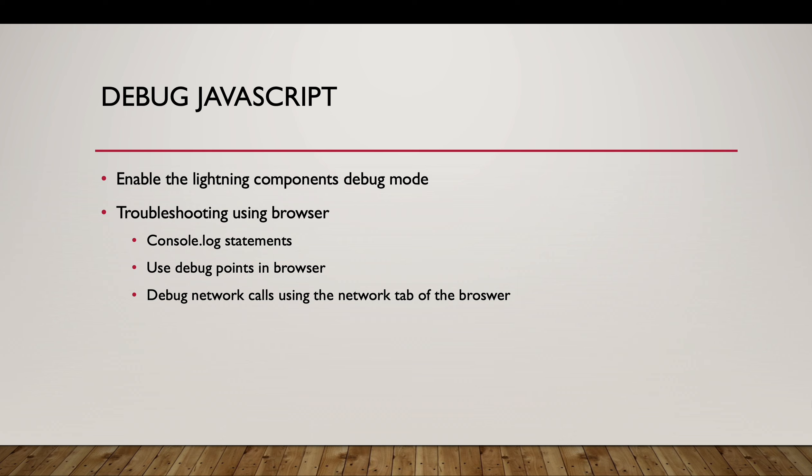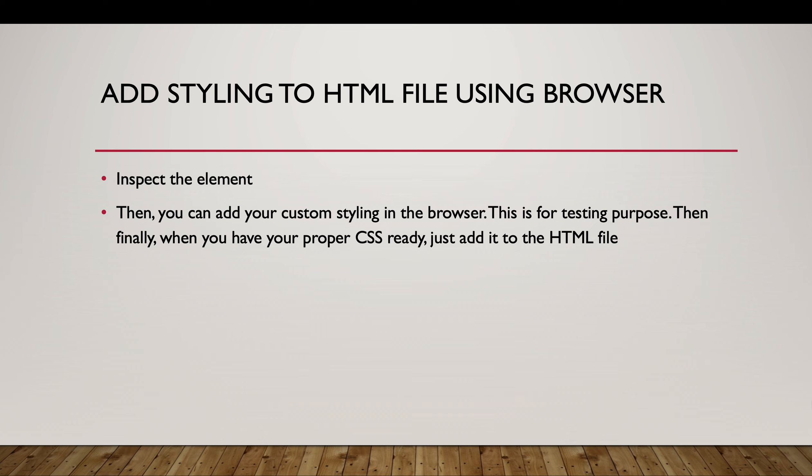First, how we can debug JavaScript in Salesforce. You have to first enable the Lightning Components debug mode. Then we will see the use of console.log statements, the use of debug points in the browser, and then the network calls that can be seen through the network tab of the browser. For example, if you make an Apex call, that is a network call you will debug from the network tab.